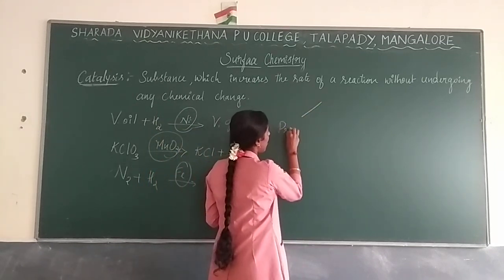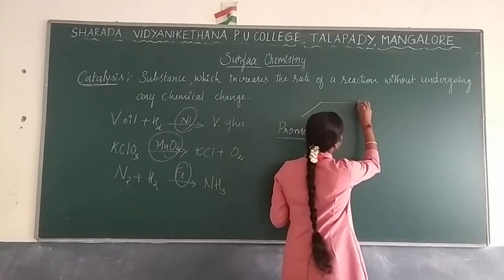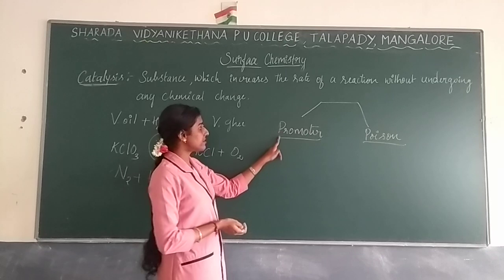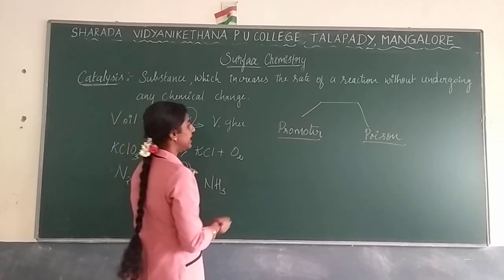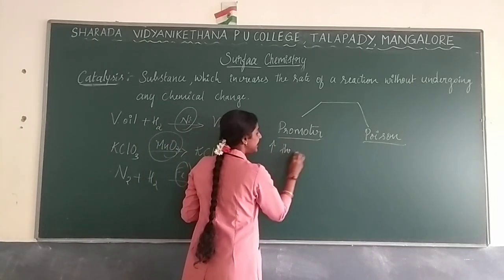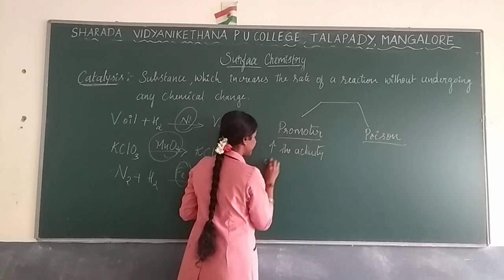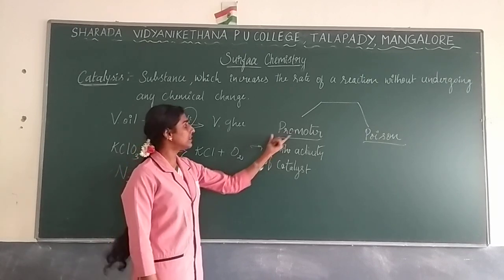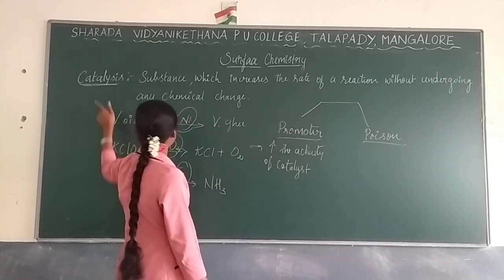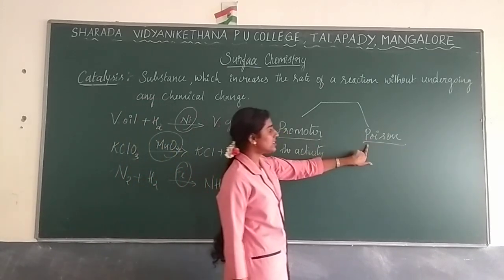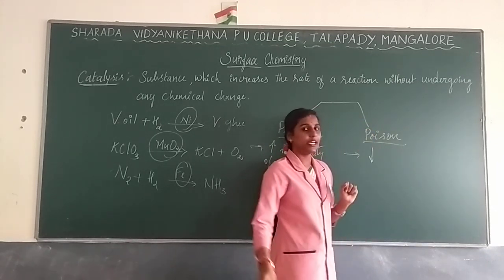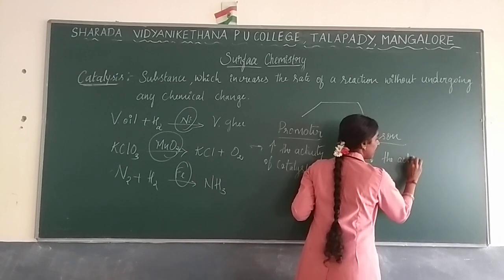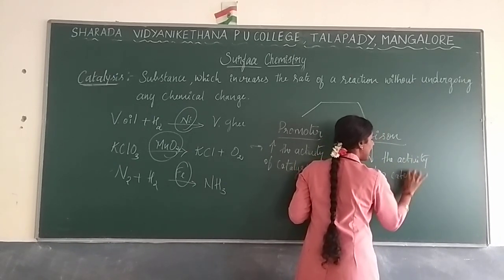Under catalysis, two important concepts are promoter and poison. A promoter is a substance that helps increase the activity of the catalyst, making the reaction even faster. A poison is a substance that decreases the activity of the catalyst, slowing down the reaction. So promoters enhance catalytic activity while poisons inhibit it.